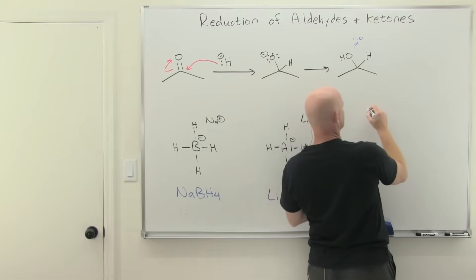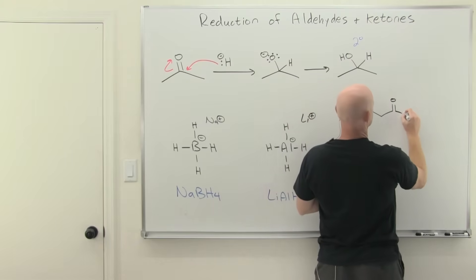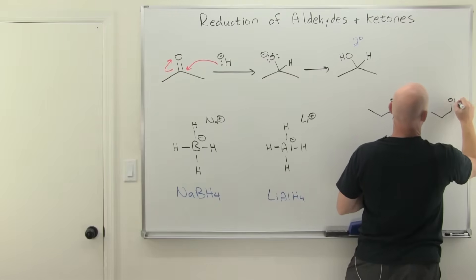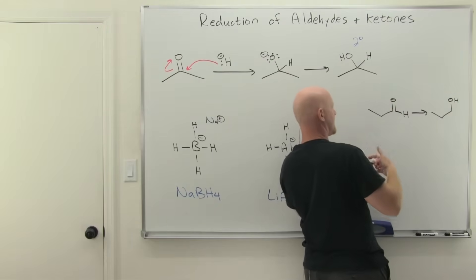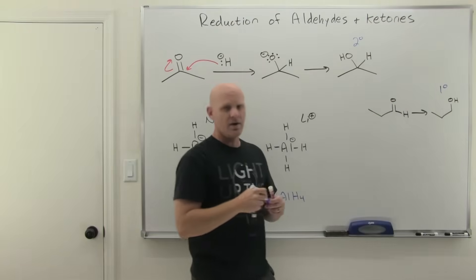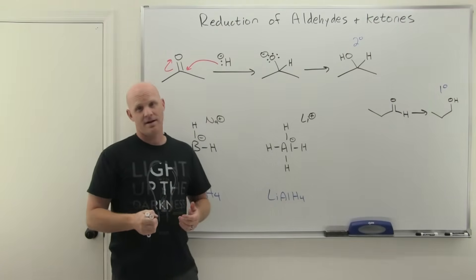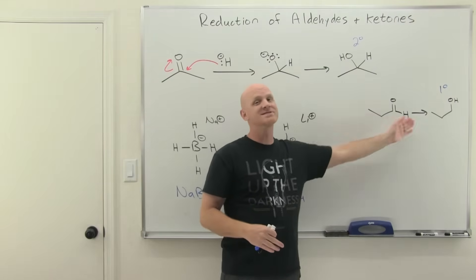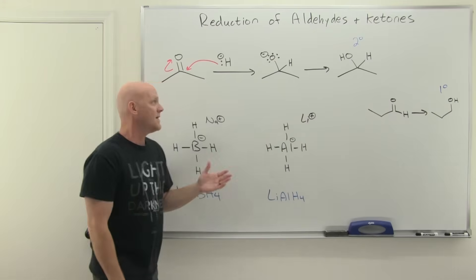Had we started with an aldehyde, we would have ended up with a primary alcohol instead. So hydride reduction of ketones leads to secondary alcohols, hydride reduction of aldehydes leads to primary alcohols.